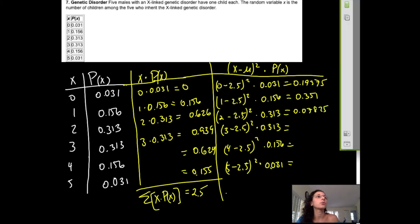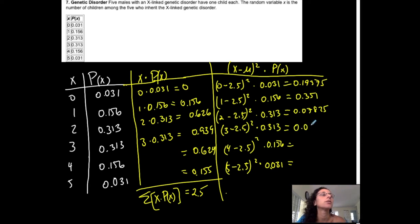Check my numbers too. Next one, 2 minus 2.5. Square that. Then times 0.313. 0.07825.